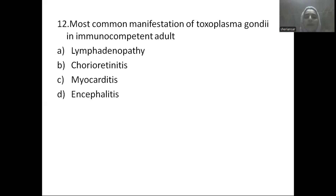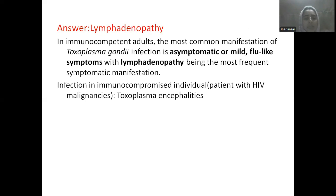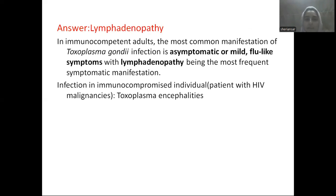Next question: the most common manifestation of Toxoplasma gondii in an immunocompetent adult — Option A: lymphadenopathy, Option B: choreoretinitis, Option C: myocarditis, Option D: encephalitis. The answer is lymphadenopathy. In immunocompetent adults, Toxoplasma gondii infection is usually asymptomatic or presents with mononucleosis-like symptoms, most commonly lymphadenopathy.